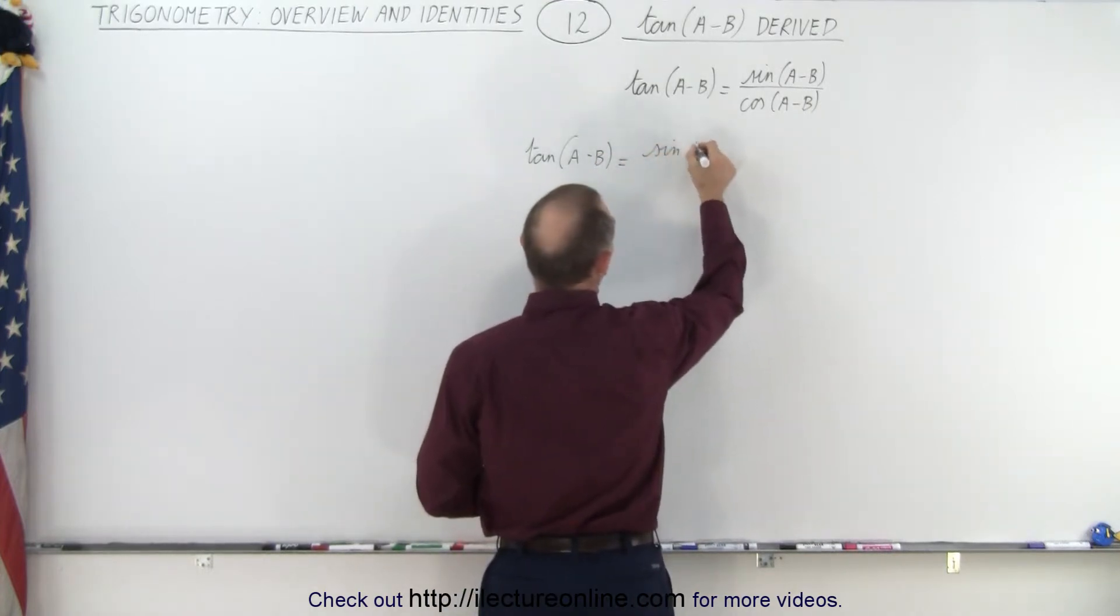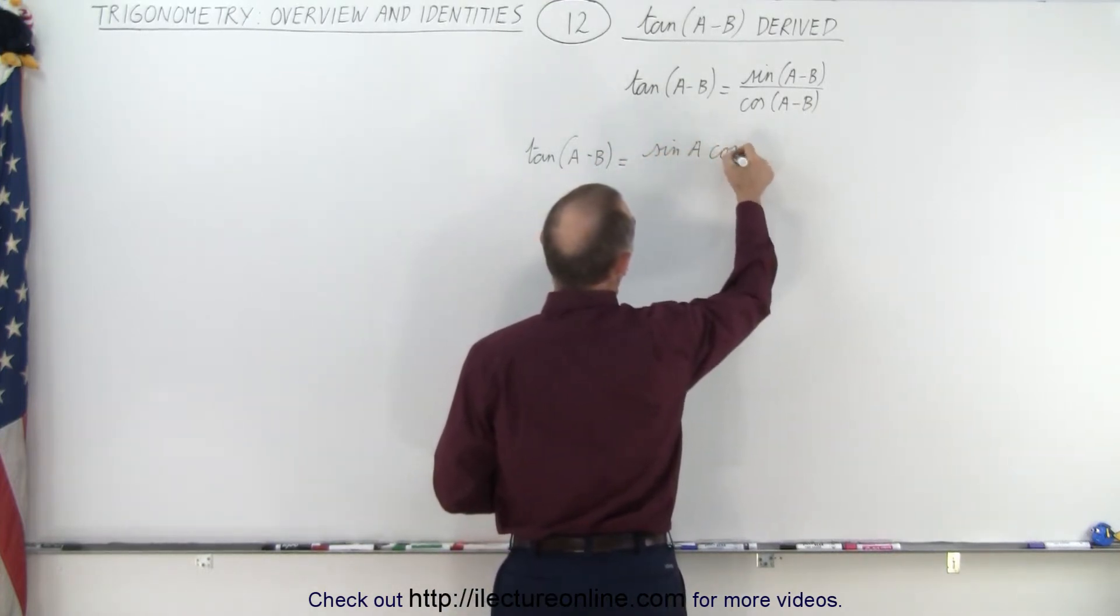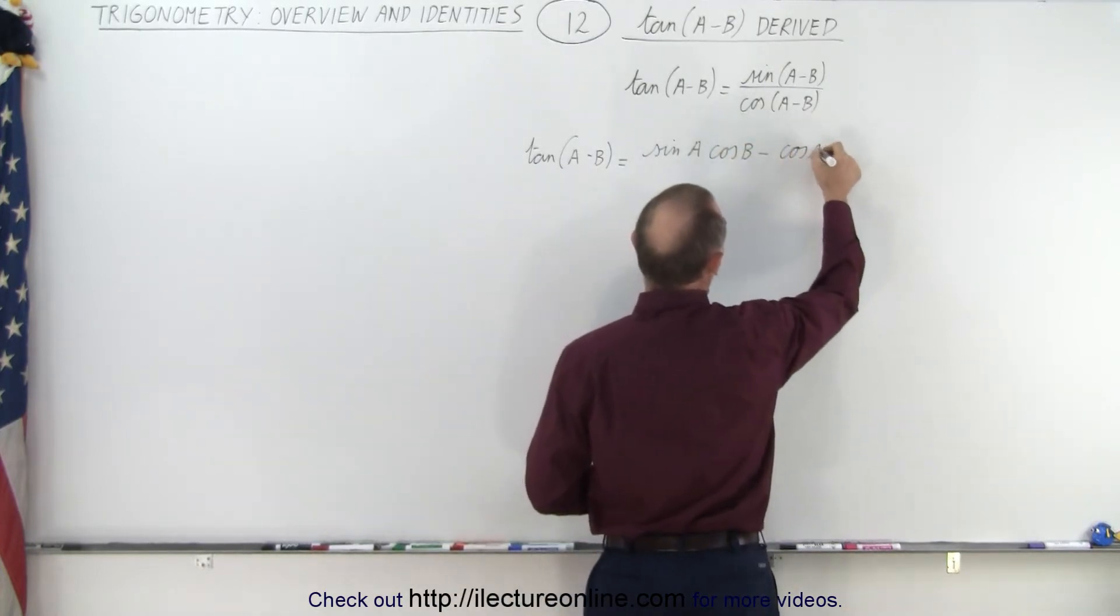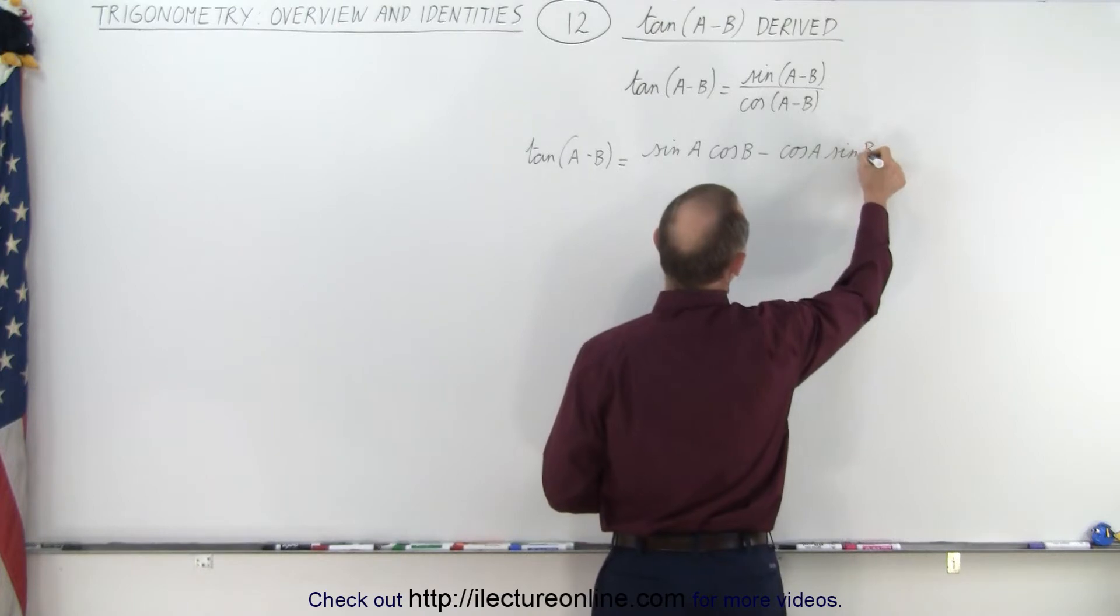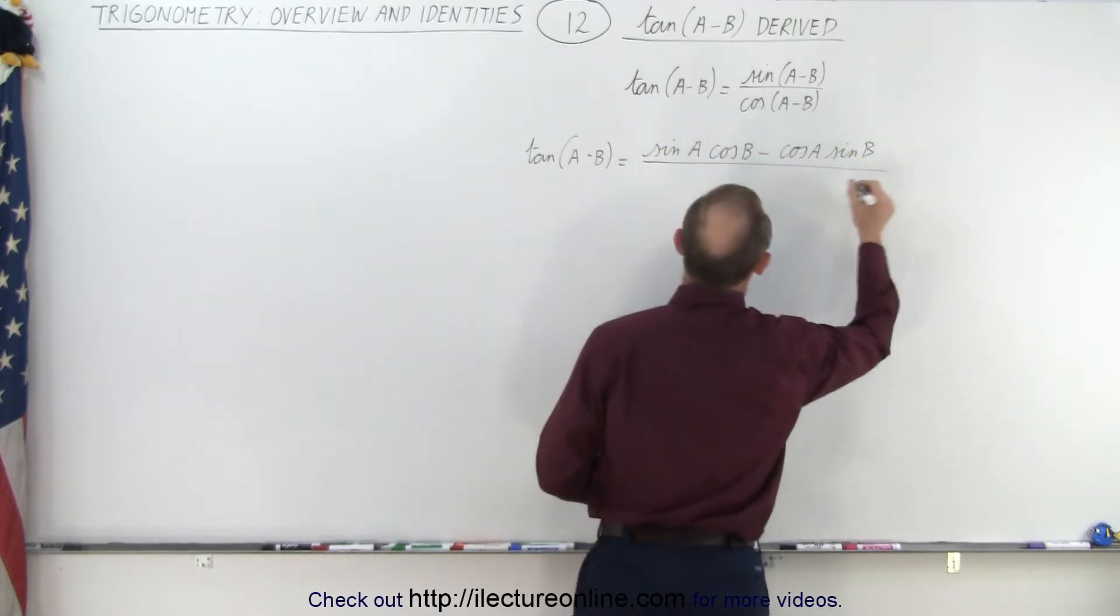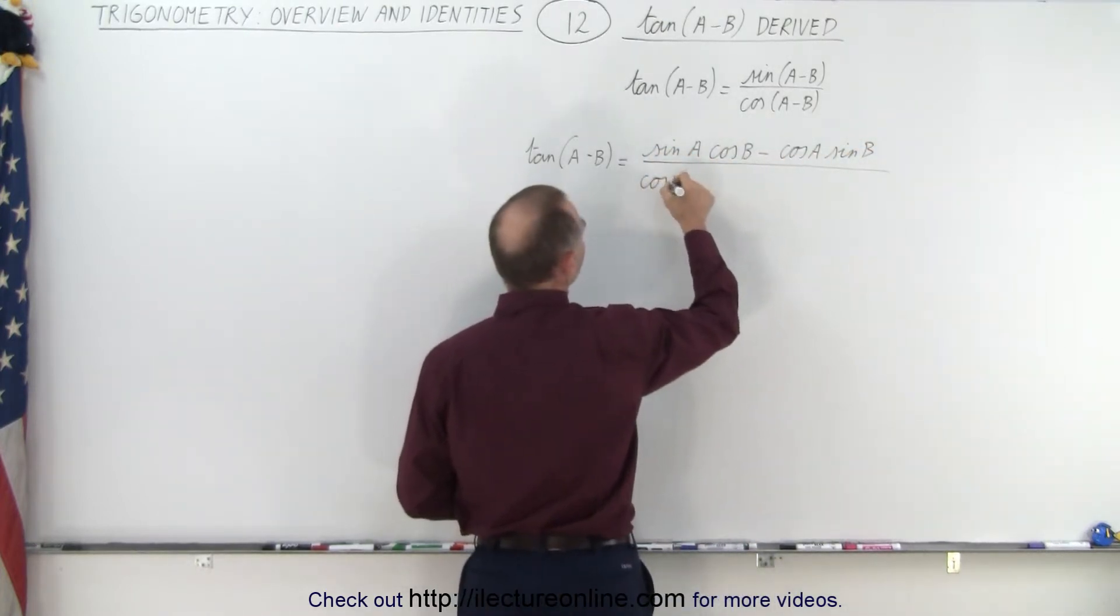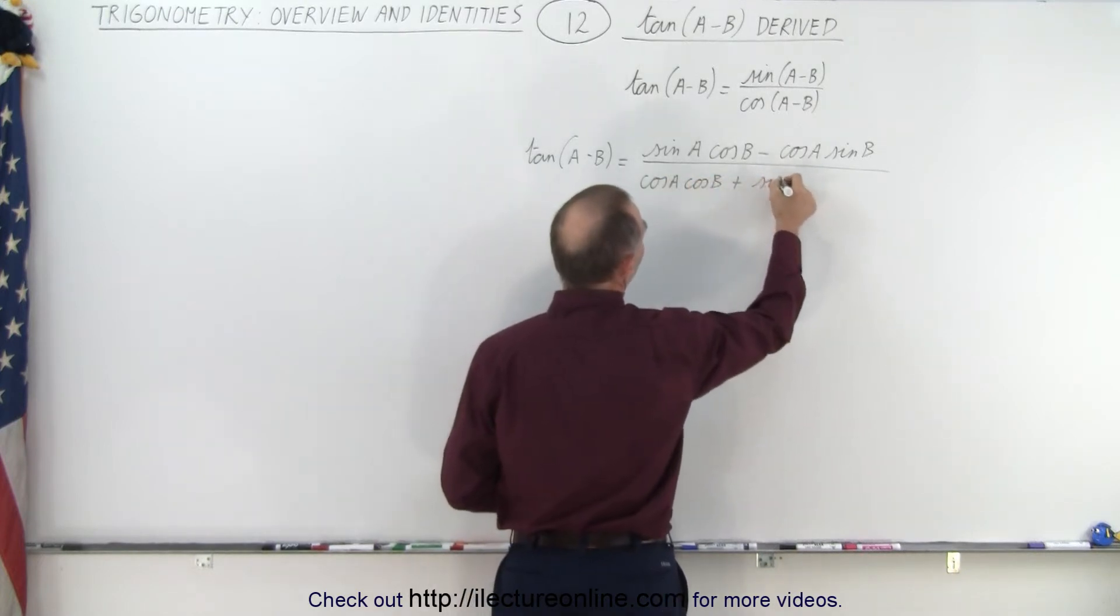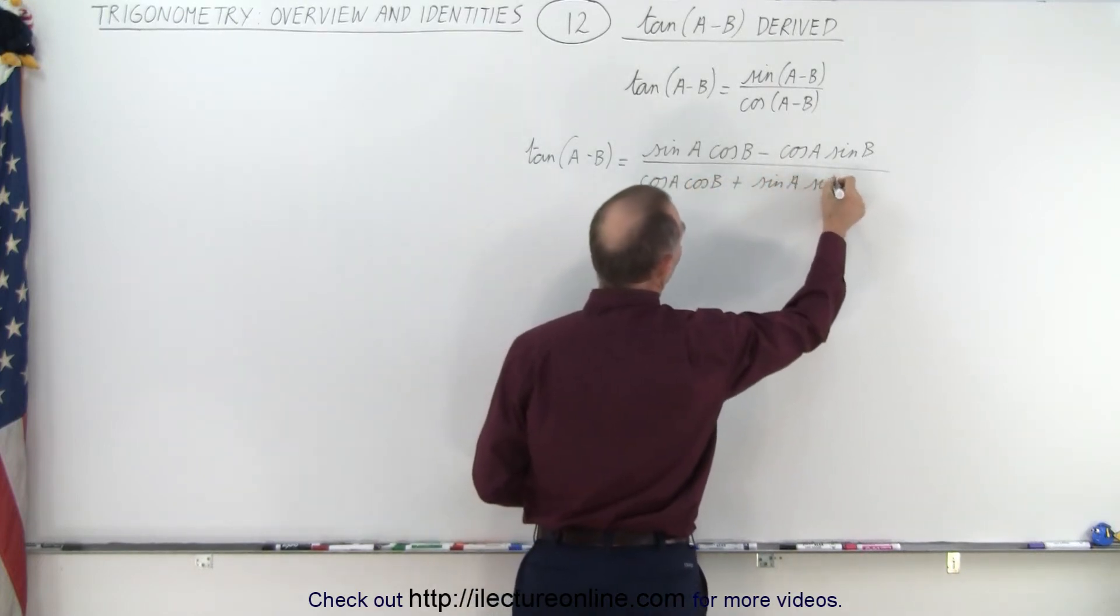We have the sine of A cosine of B minus the cosine of A sine of B, all divided by the cosine of A cosine of B plus the sine of A times the sine of B.